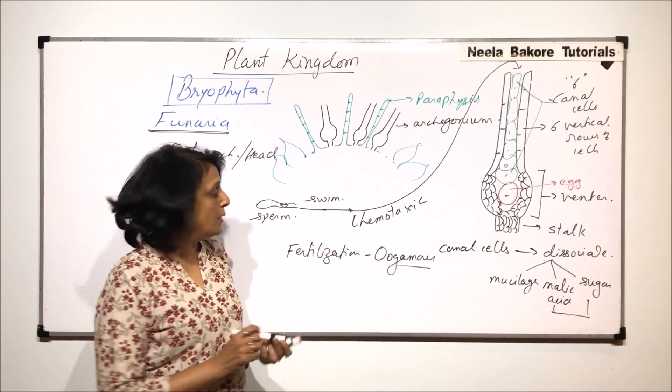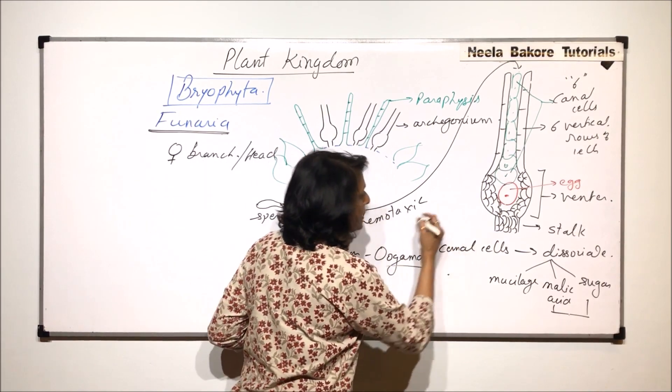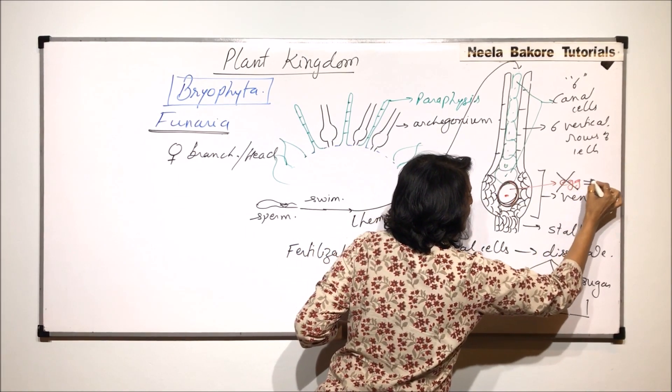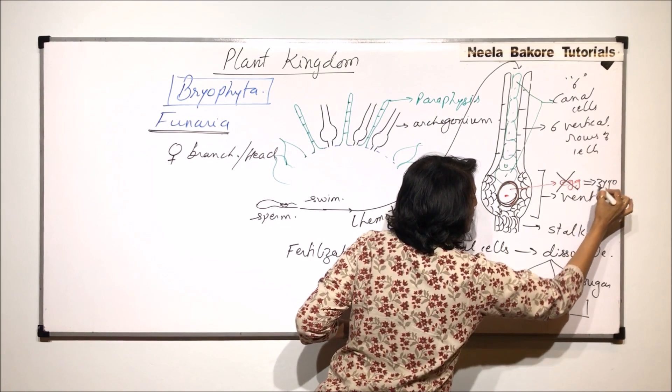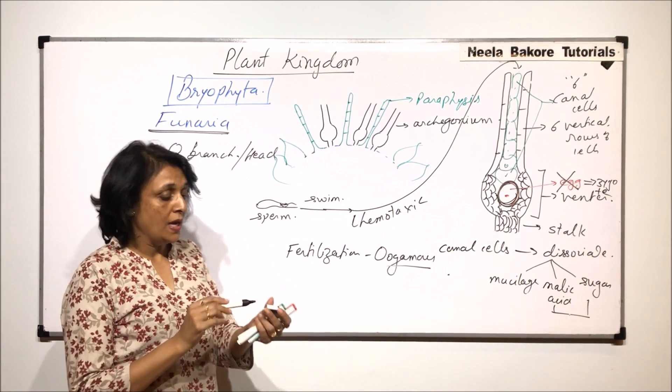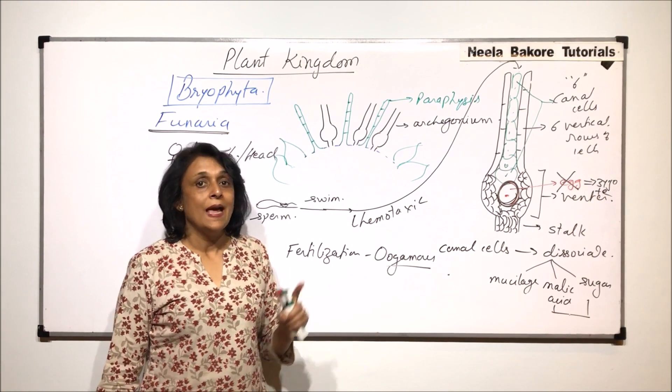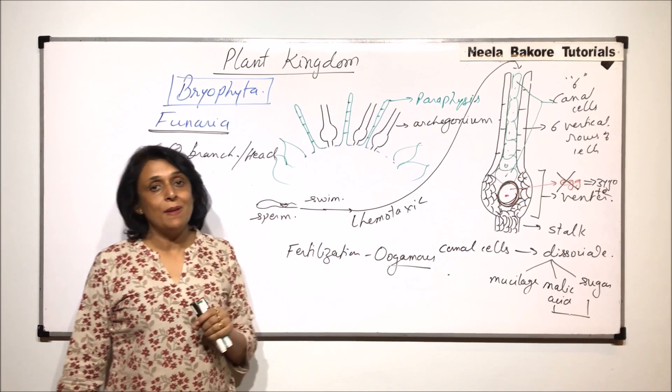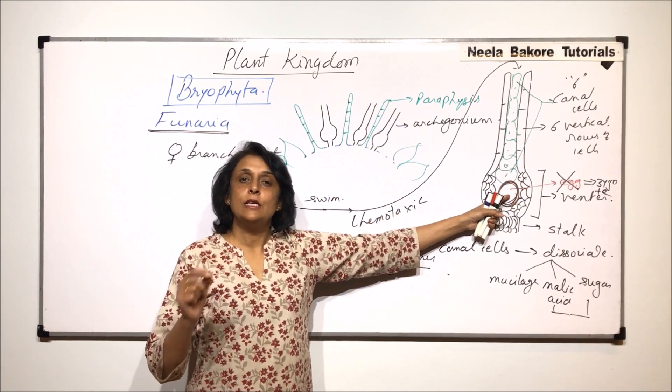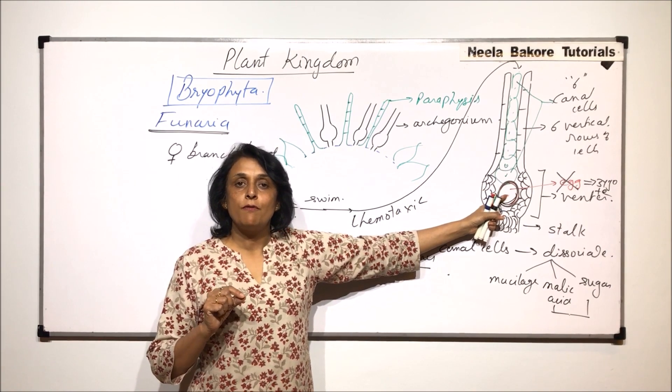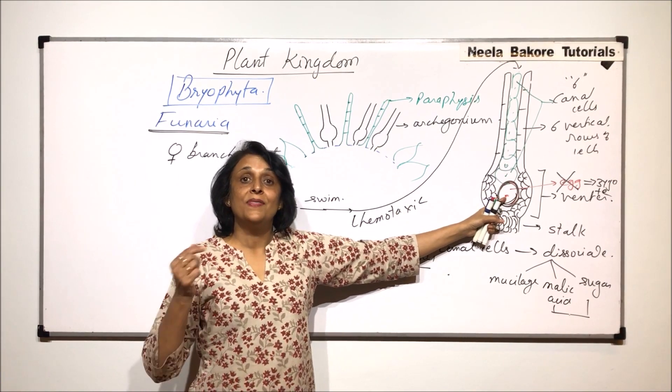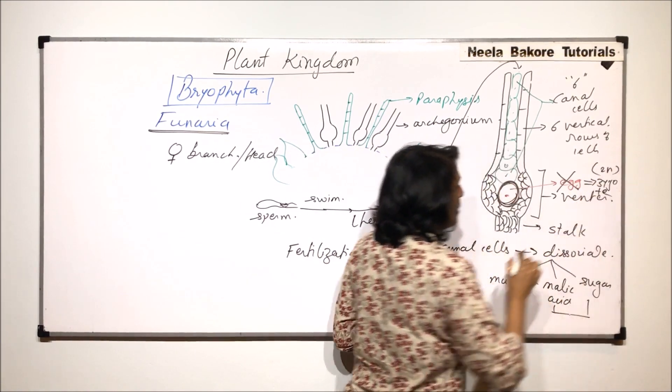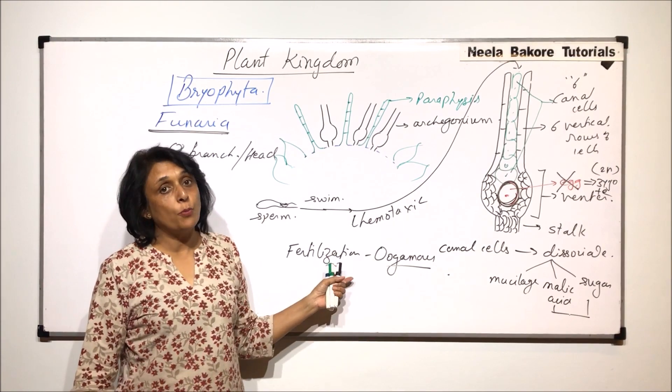So fertilization is oogamous type. Oogamous means the egg is large, non-motile, but the male gametes are small and they are motile. So when it goes here, this is the place where fertilization takes place. And zygote is formed in the venter. So after this fertilization, this egg will be replaced by a zygote. So after fertilization, this changes into a zygote. And this zygote is going to give rise to the sporophyte.